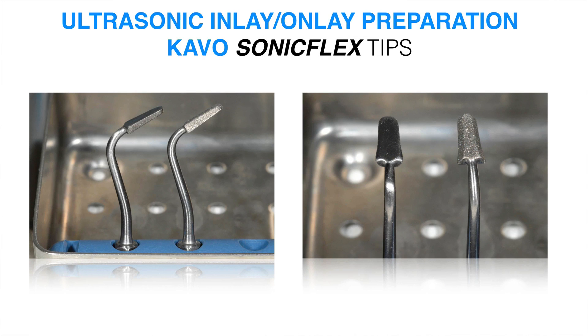I'm using the Kavo Sonic Flex Scaler with specially designed tips. If you were to look on the Kavo website, look up Kavo Sonic Flex Tips, and you look at preparation tips, these are specifically designed tips to prepare box forms and posterior teeth. And I use these for inlays, onlays, and even for direct class 2 restorations.